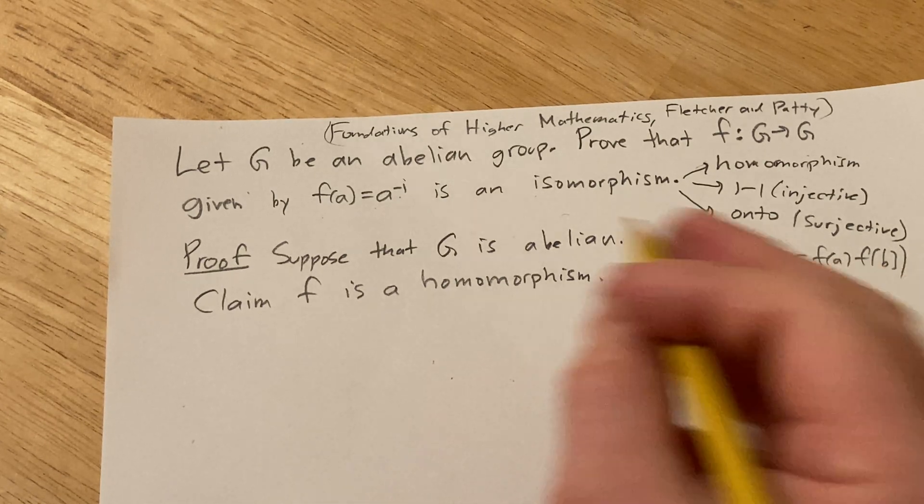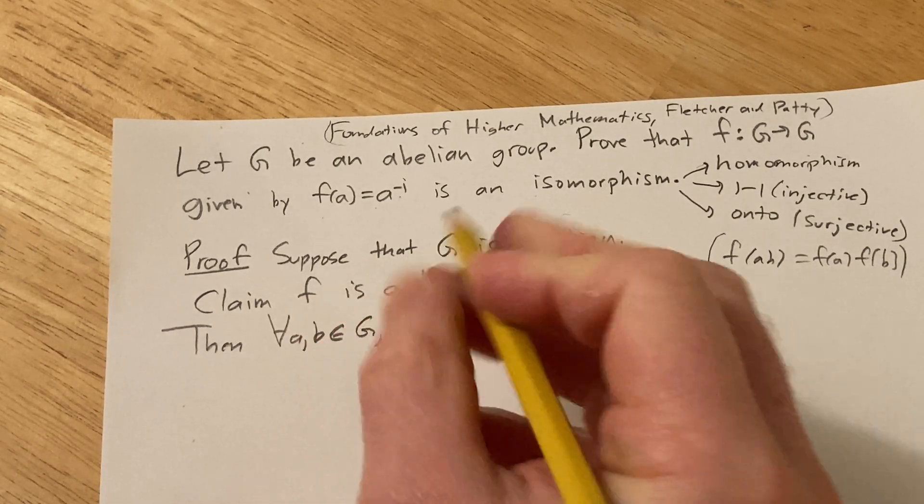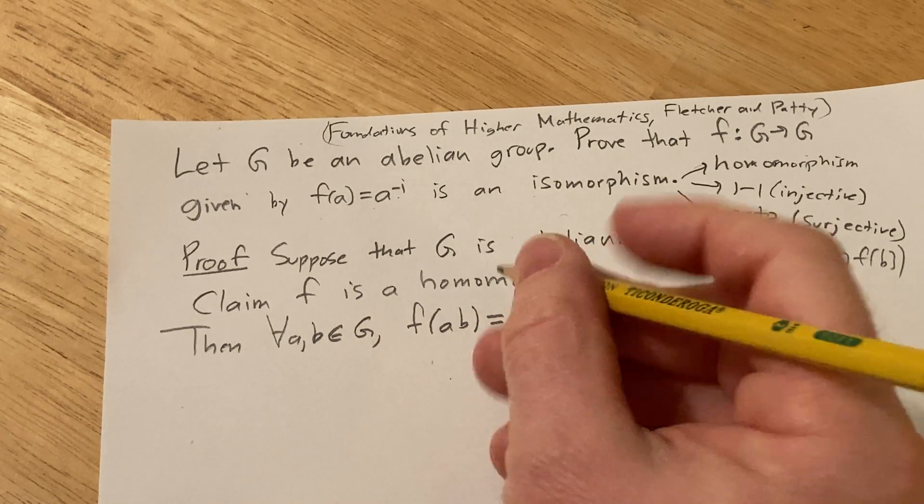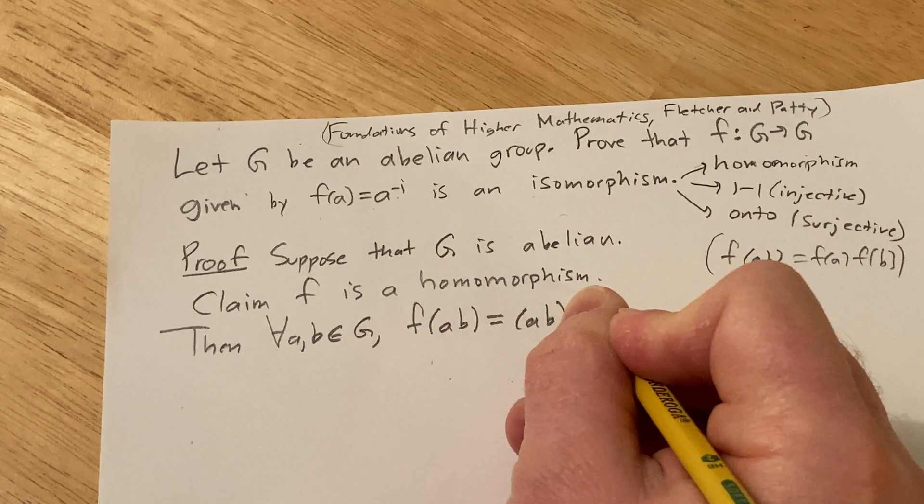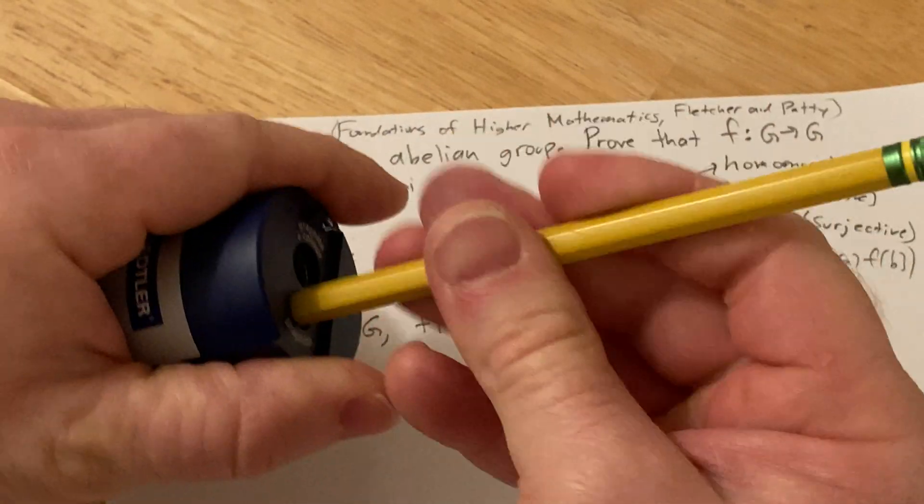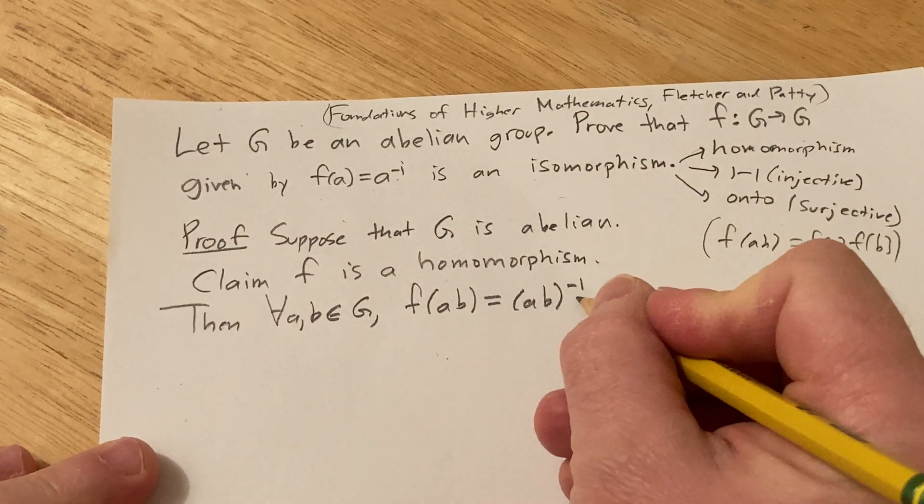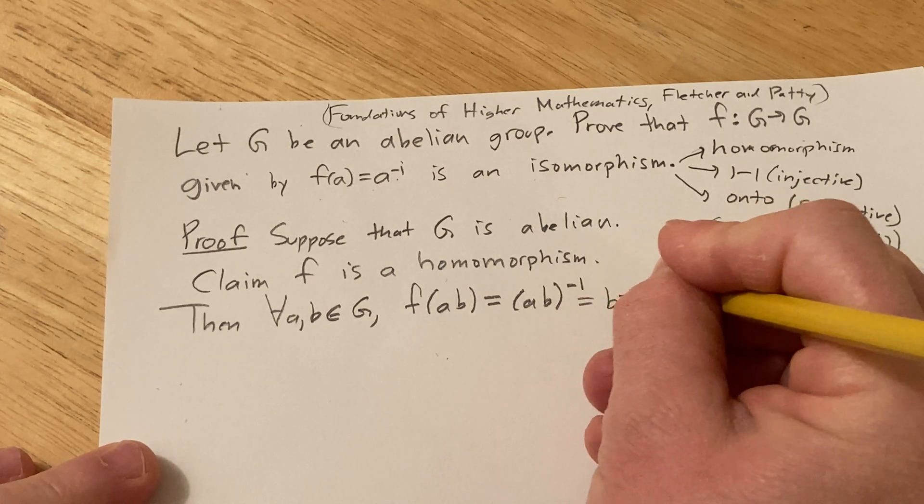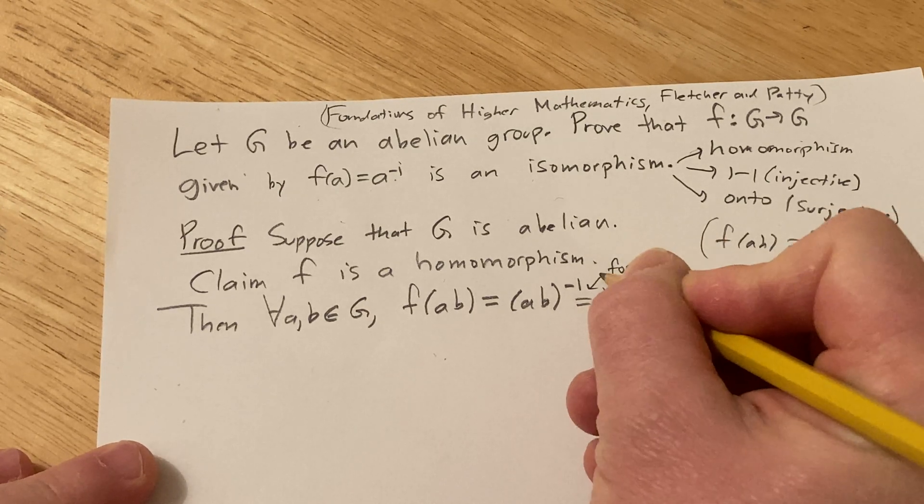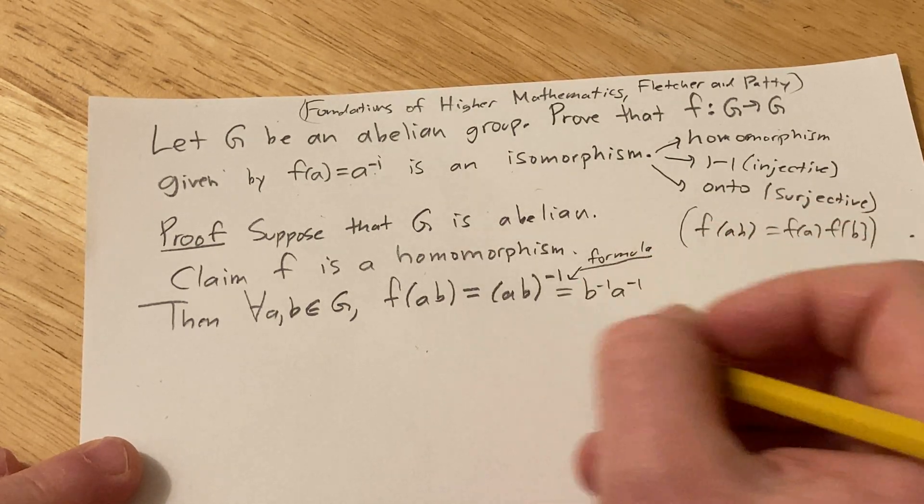So let's try it. So then for all a, b in G we have f(ab). Well what is that equal to? That's equal to (ab) inverse, just applying the function here, just replacing a with ab. I'm going to sharpen my pencil a little bit here. Good stuff. And there's a formula for this. This is actually equal to b inverse a inverse. That's via a formula, so I'm just going to put a little arrow here and say formula. That's one of those formulas that you should just know if you know group theory. Totally worth knowing, very easy to prove, a little bit tedious. You just have to use associativity a bunch of times.